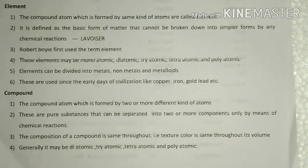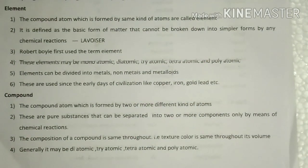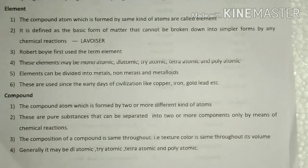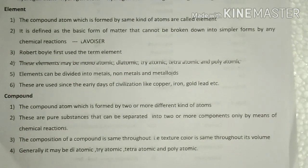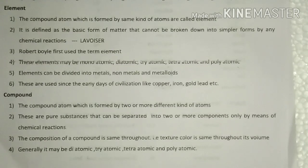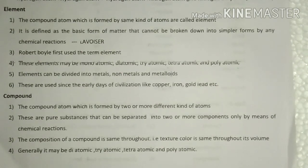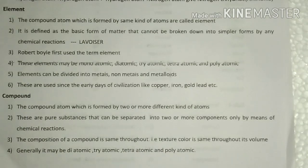An element cannot be broken down into simpler forms by any chemical reaction. Though you do many chemical processes, it should not be dissociated. For example, HCl — hydrochloric acid — is an example of a compound. If you apply heat or do some chemical reactions, it will be split into hydrogen and chlorine. That means there is a chemical dissociation of atoms in the case of a compound. There is no chemical dissociation of atoms in the case of an element.